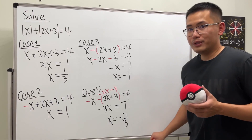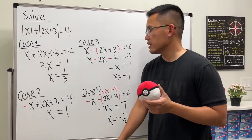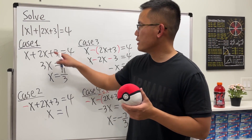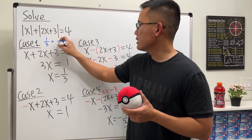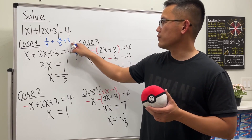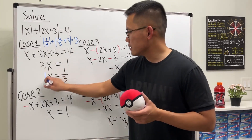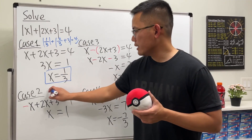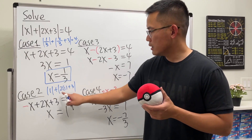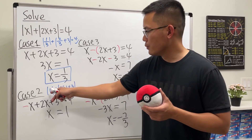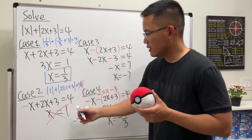Now let's check. Case 1 — plug in 1/3: we get 1/3 plus 2/3 plus 3, which is 1 plus 3 equals 4. That works! Case 2 — plug in x = 1: we get absolute value of 1 plus absolute value of 2 times 1 plus 3, which is 1 plus 5 equals 6. That's not 4, so x = 1 is not a valid answer.